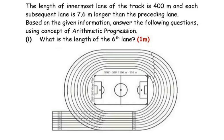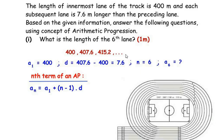We need to find the length of the 6th lane. The sequence of lane lengths is 400, 407.6, 415.2, and so on. The first term a1 is 400 and the common difference d is 407.6 minus 400, which gives us 7.6.